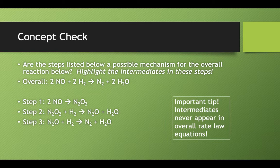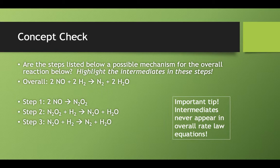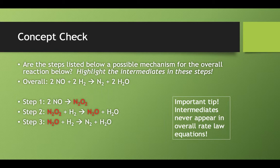So we can see in step one, we produce some dinitrogen dioxide, which immediately goes on and reacts in step number two. It makes dinitrogen monoxide as a product in step two, but that dinitrogen monoxide goes on in step three to be used up as a reactant.